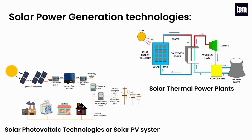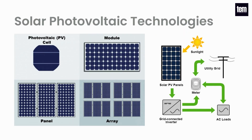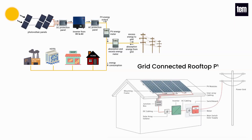Solar power generation technologies can be classified into two categories: solar photovoltaic technologies, or solar PV systems, and solar thermal power plants. Photovoltaic cells, or solar panels, are semiconductor devices that convert part of the incident solar radiation directly into electrical energy. PV technologies are mainly used on rooftops of commercial and residential buildings and as large-scale grid-connected power plants.